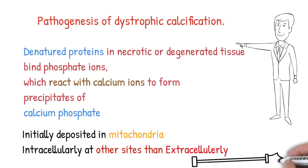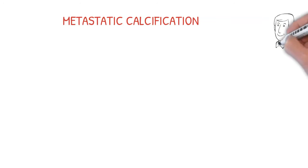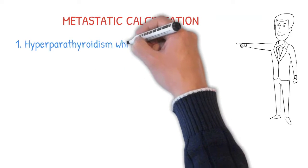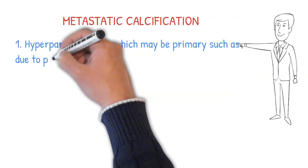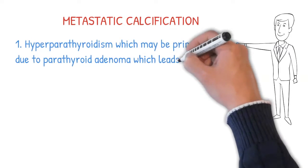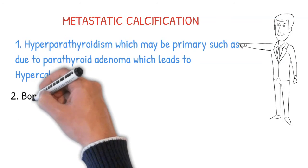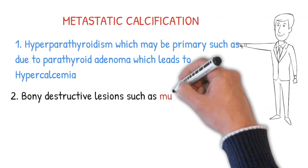Now, what is metastatic calcification? 'M' for metabolic errors. What are these metabolic errors? Hyperparathyroidism — the parathyroid hormone is responsible for increasing blood calcium levels. This parathyroid hormone acts on bone, intestine, and kidney — from everywhere it increases calcium absorption, causes calcium breakdown from bone, and raises calcium in the blood, resulting in hypercalcemia.